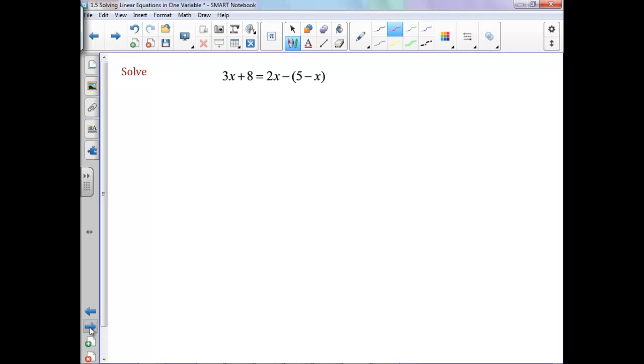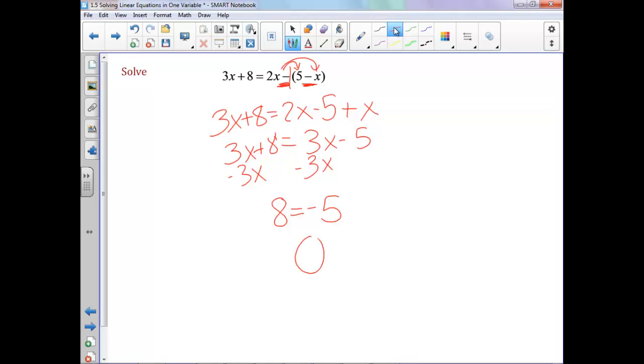Now in this case, remember, it's like we have a negative 1 out front. So we'll have this 3x plus 8 equals 2x. Distribute this negative 1 to both. So negative 5x. Negative 5 plus x. Because we'll have a negative times a negative is a positive. Now let's combine what we can on that right side. 2x plus x is 3x minus 5. Let's combine our x's. We're left with 8 equals negative 5. Well, 8 doesn't equal negative 5. So this means there's no solution. This means no matter what we pick for our value of x, nothing is ever going to work. There are no solutions that will work in this equation.